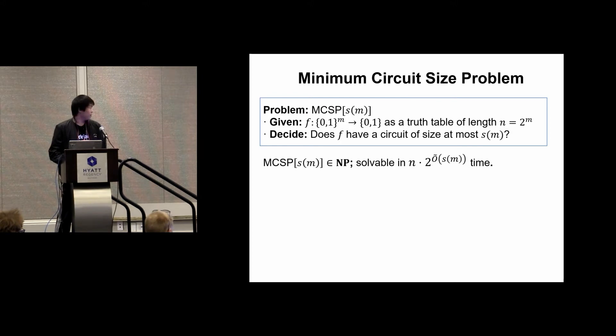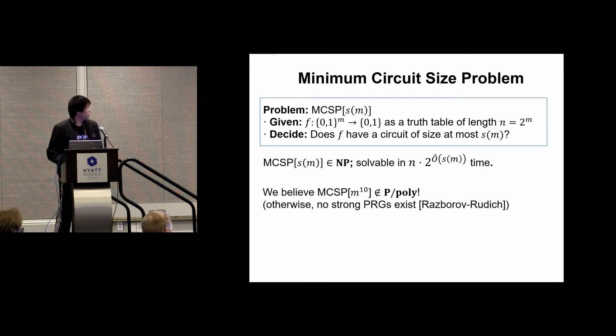If S(m) gets bigger, this brute force algorithm would be slower. And if we believe that strong PRGs exist, then MCSP with a big enough polynomial parameter, say m^10, is not solvable in P/poly.